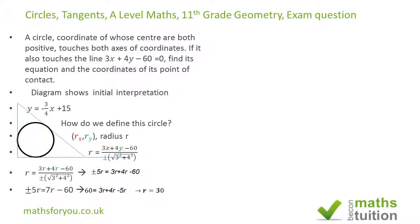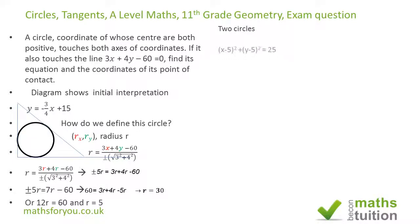That gives 2r = 60, so r = 30. Using the minus case: −5r crossed over becomes +5r, giving 12r = 60, so r = 5. We now have two circles: (x − 5)² + (y − 5)² = 25 for the small circle, and (x − 30)² + (y − 30)² = 900 for the larger circle.